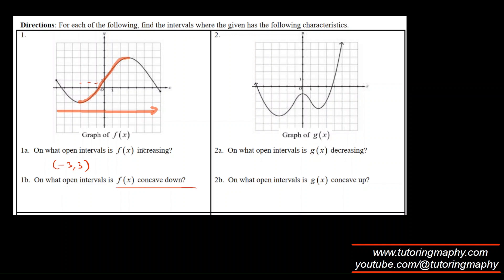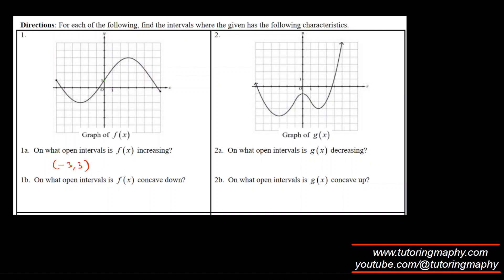Now, on what open intervals is f(x) concave down? Concave down is a frowning face function. We can see this is a smiling face up to a certain point, and then it turns into a frowning face — or downward cup. So the concave down interval starts at x equals zero and goes all the way to seven. The answer is zero to seven.